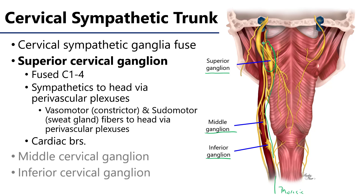It services the head via paravascular plexuses — a meshwork of sympathetic post-ganglionic fibers that travel along major arterial conduits. In this case, they travel along the common carotid artery and may be distributed throughout the head and neck via paravascular plexuses of the external and internal carotid.